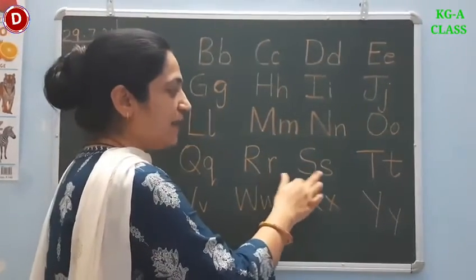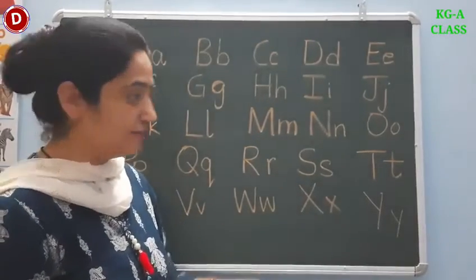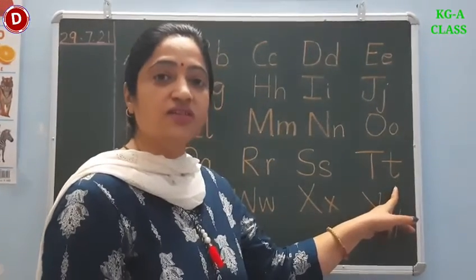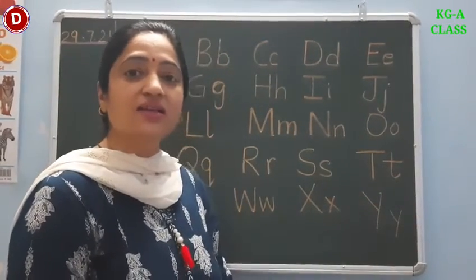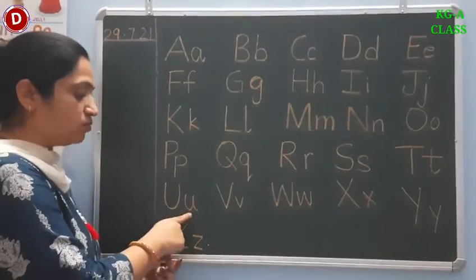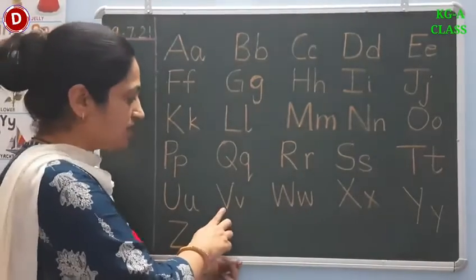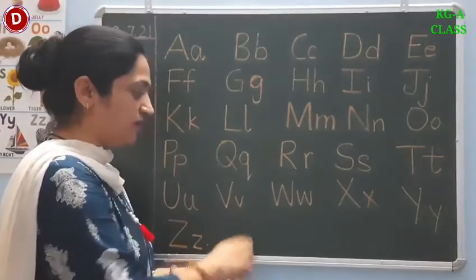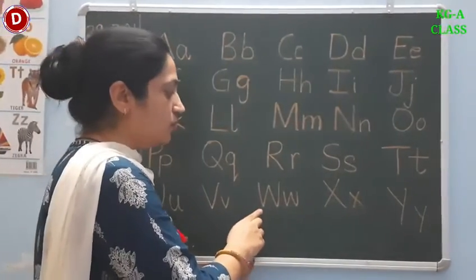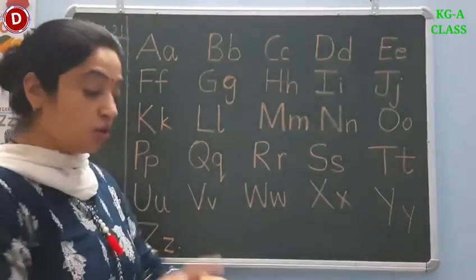Now comes S. This is capital S and this is small S. S says 's' as in sun. Now comes T. Children, this is capital T and this is small T. The sound of T is 't' as in telephone. Children, this is capital U and this is small U. The sound of U is 'u' as in umbrella. Now children, this is capital V, small V. V says 'v' as in van. Now comes W. This is capital W, small W. W says 'w' as in watch.